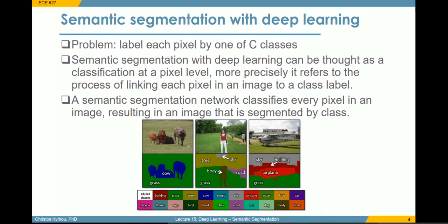Semantic segmentation deals with the problem of labeling each pixel in our image as one of n number of classes. We want to group the pixels of an image together based on the object class that they are located on. We previously saw that we could do this with features based on color. In this lecture, we will see how to solve this problem with deep learning through a machine learning approach.